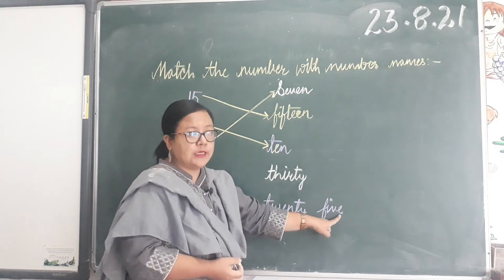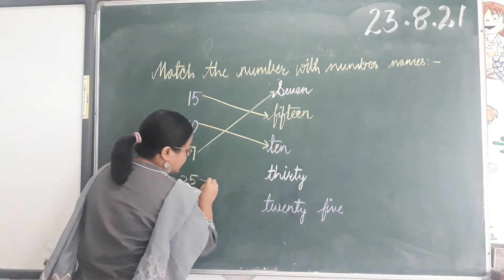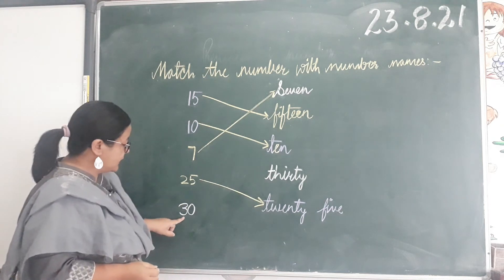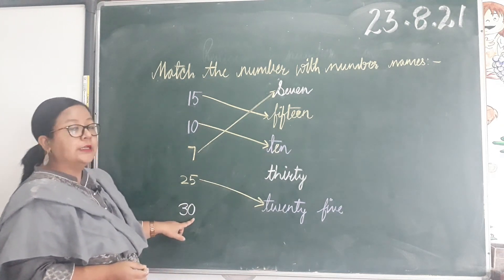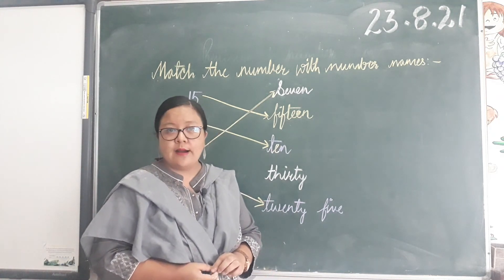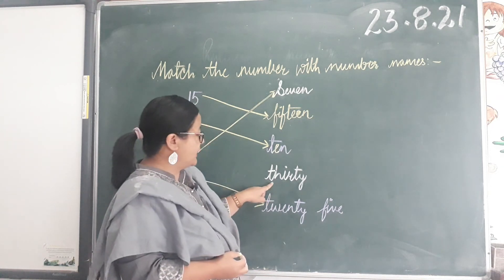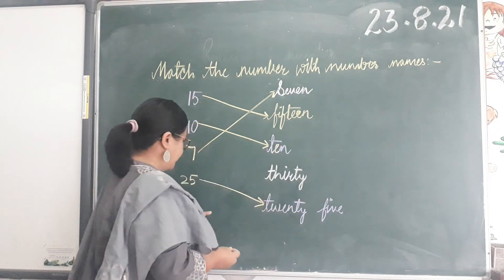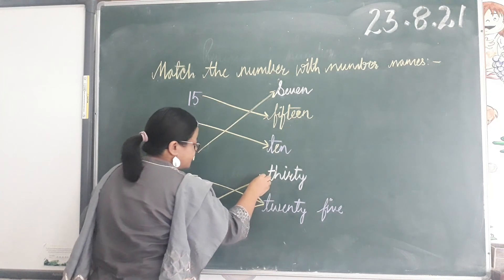Now what number is this? Three zero, thirty. Let's spell it together - T, H, I, R, T, Y - thirty.